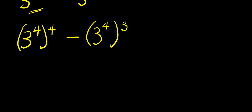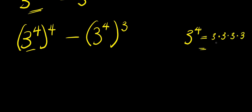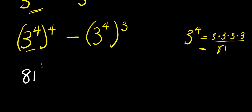From here we need to find out what three to the power of four is. Three to the power of four is simply three times three times three times three. That is three times three equals nine, times three equals twenty-seven, times three equals eighty-one. So three to the power of four is eighty-one. Let's replace this with eighty-one to the power of four minus eighty-one to the power of three.